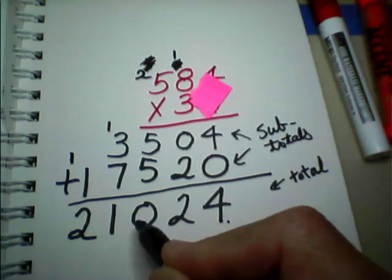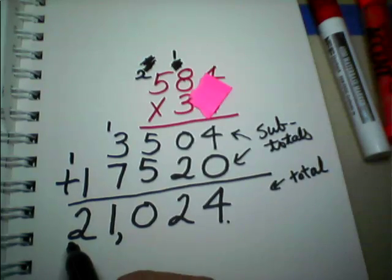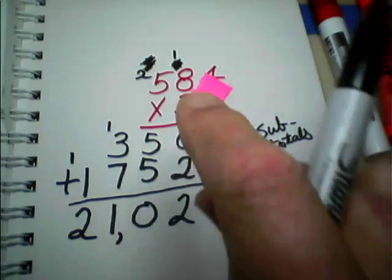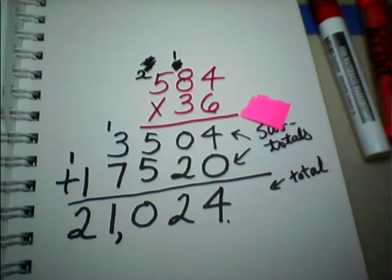1, 1's, 10's, 100's, 1,000's. So, the answer is 21,024. 584 times 36. Somebody check that, will you? I'm not sure I did that right.